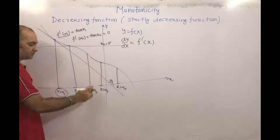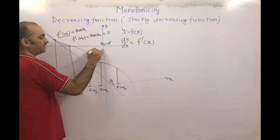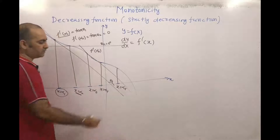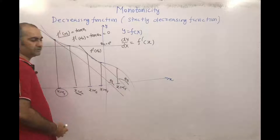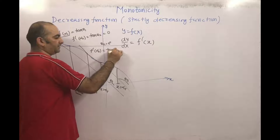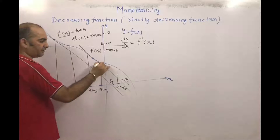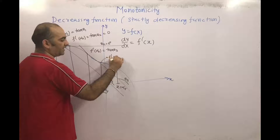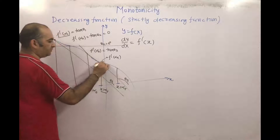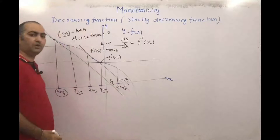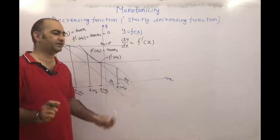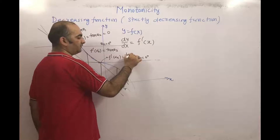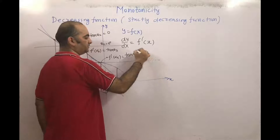Similarly, at x = alpha3, the slope of the tangent is f'(alpha3) = tan(theta3). At x = alpha4, if we draw the tangent, it is also parallel to the x-axis, making theta4 = 0 degrees. So f'(alpha4) = tan(theta4) = 0.